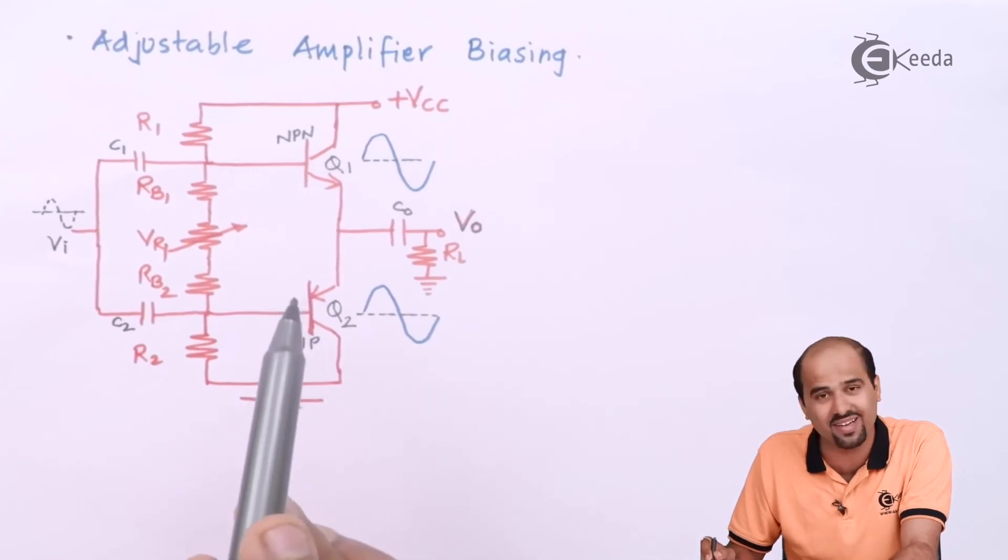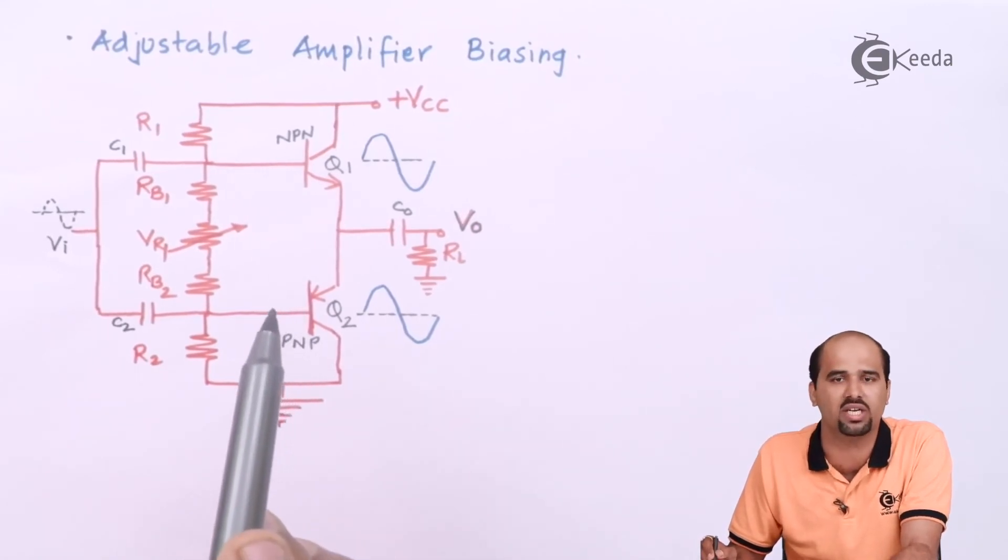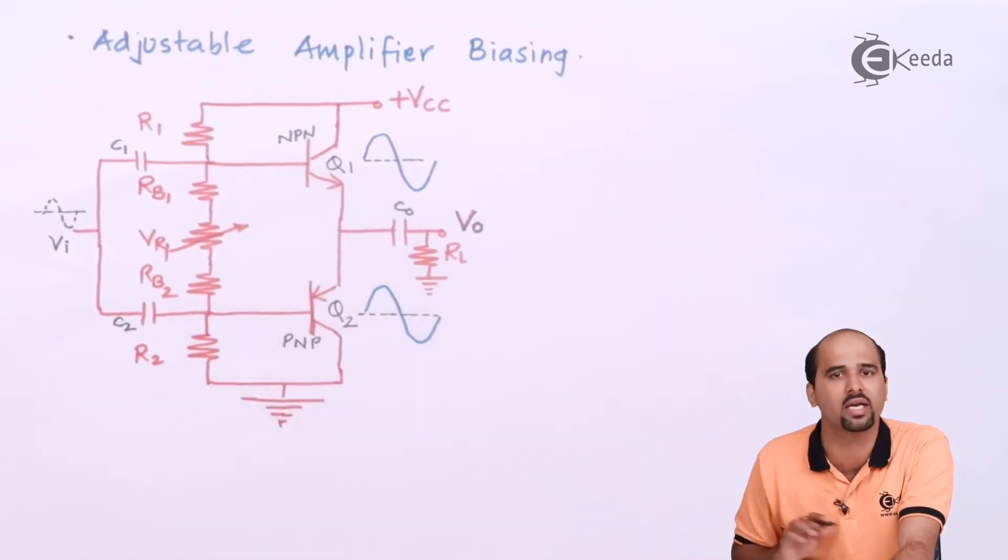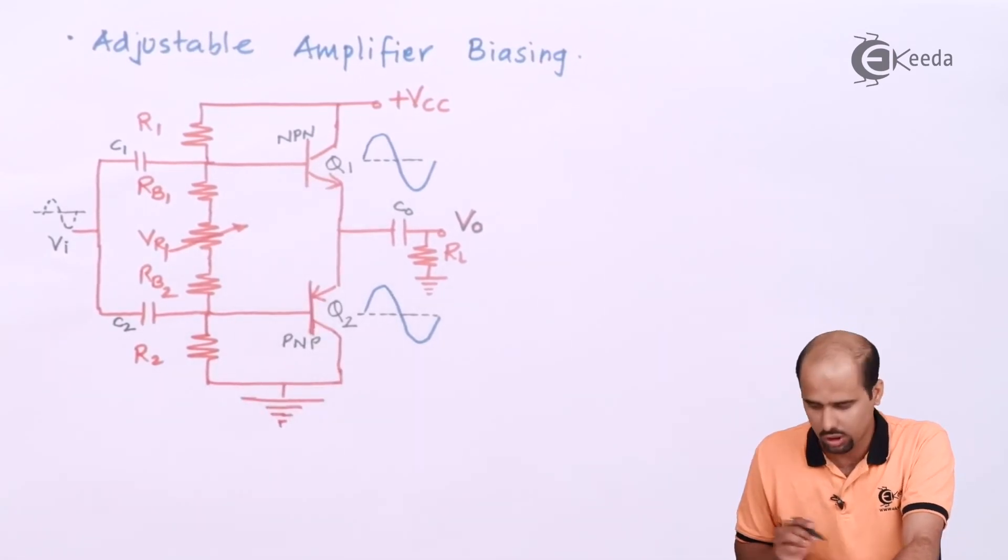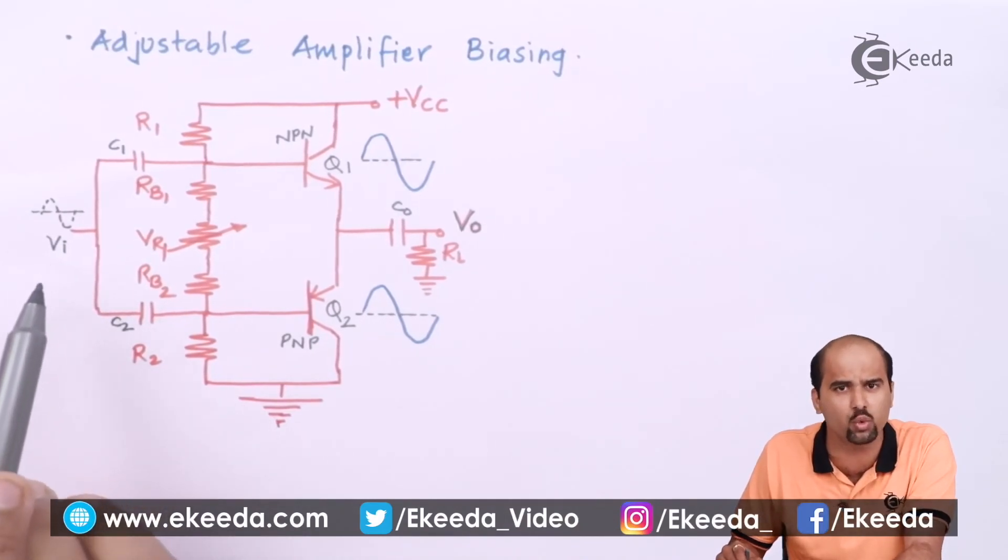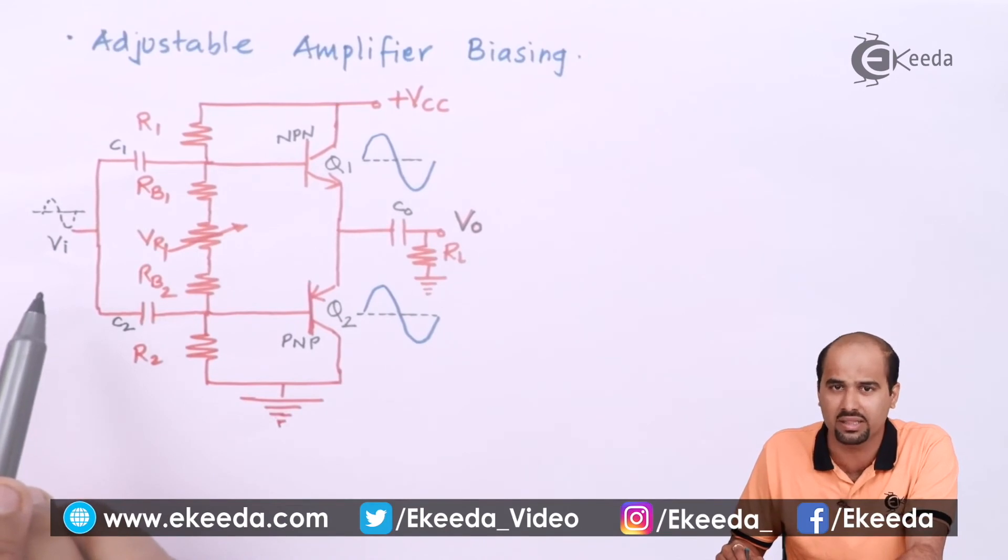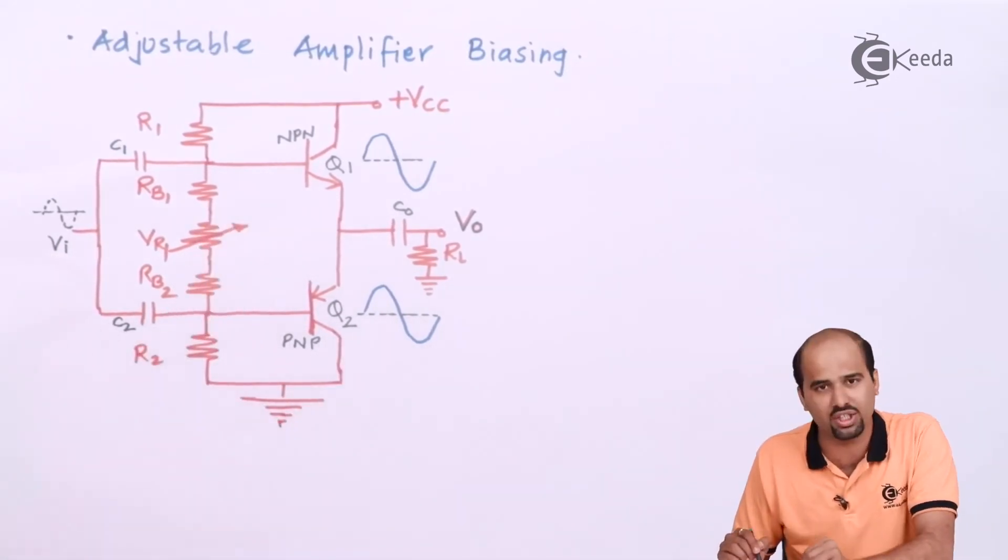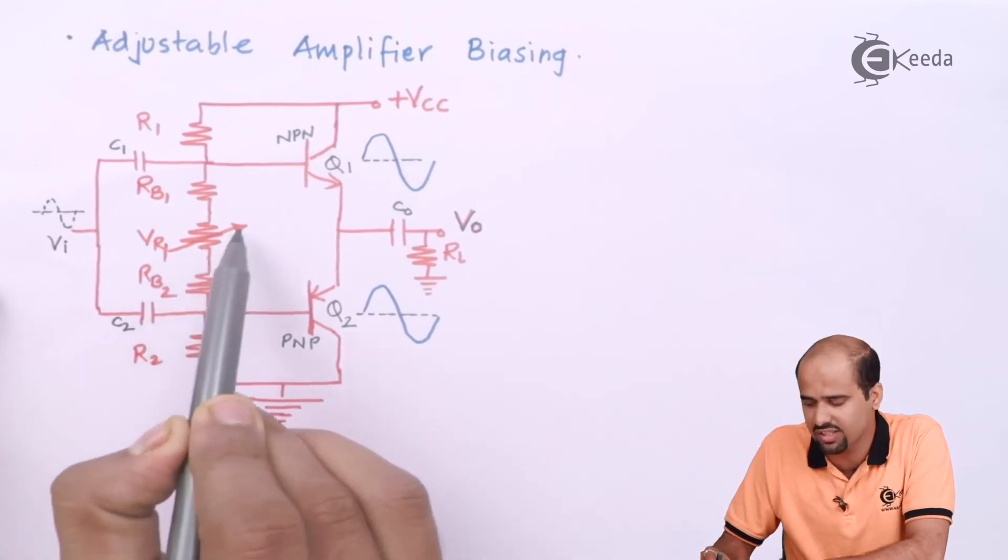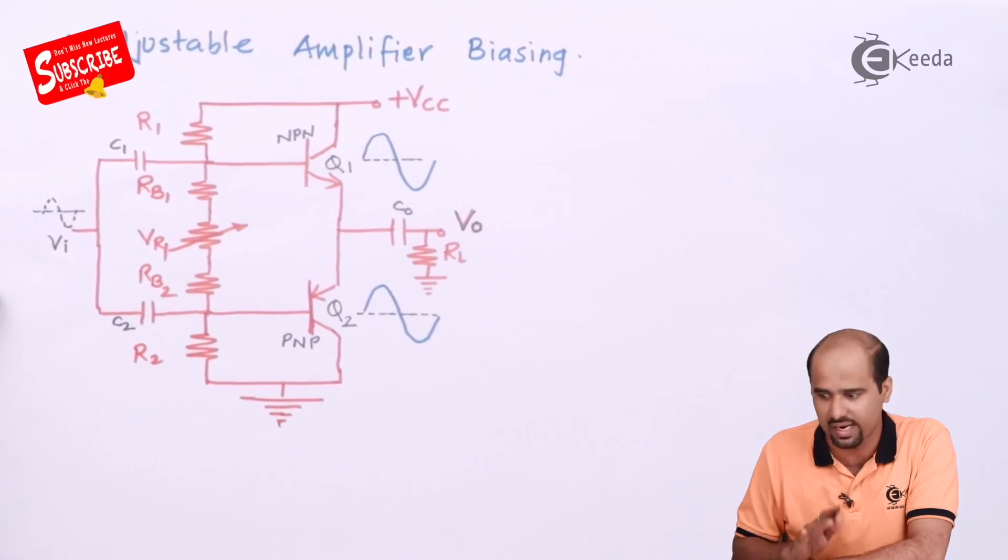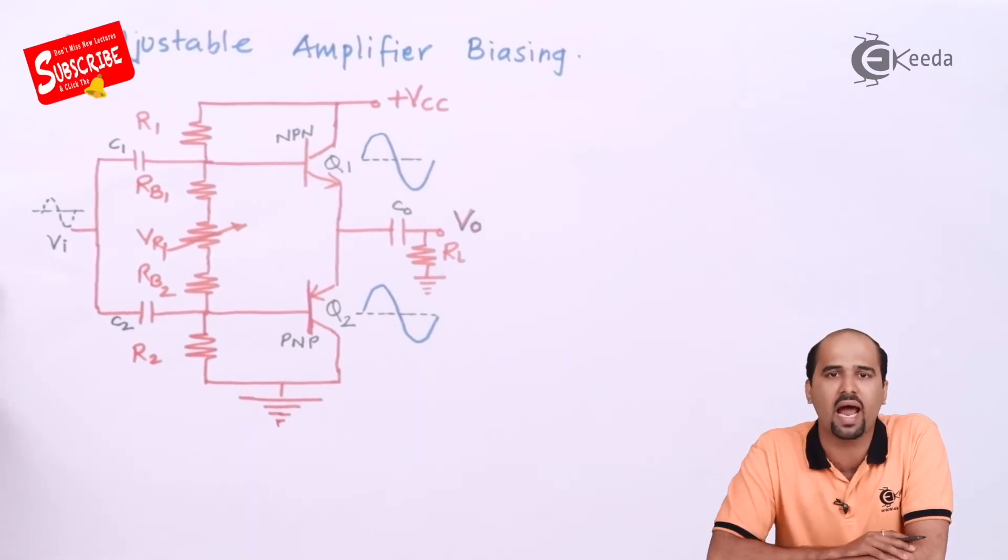So even if 0 voltage is given and towards positive side, Q1 will start conducting. Even if V in voltage, input voltage is given 0 volt and it is going towards just a negative side, then Q2 will conduct, Q1 will cut off. So this can be achieved by just varying this particular resistor in between RB1 and RB2. And this is how I can say that adjustable class AB power amplifier.